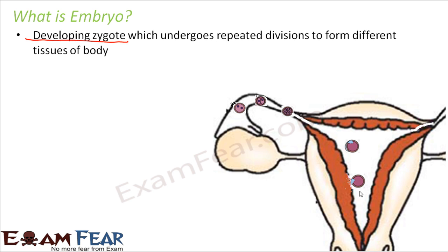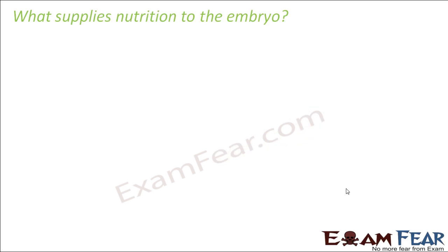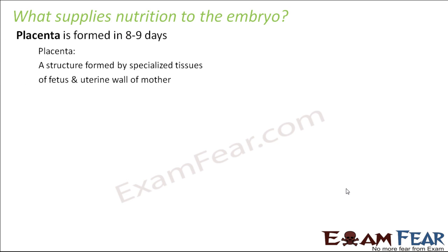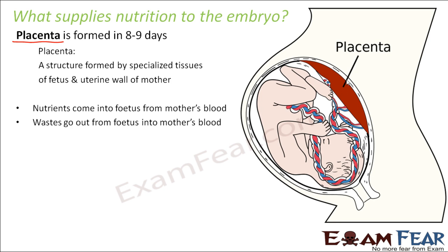When the zygote reaches the uterus, you can see that a lot of cells have already been formed — we no longer call it a zygote but an embryo. So the question is: what supplies nutrition to the embryo? The embryo needs nutrition to grow, and that is where placenta comes in. Placenta is a flat, round structure made up of specialized tissues.